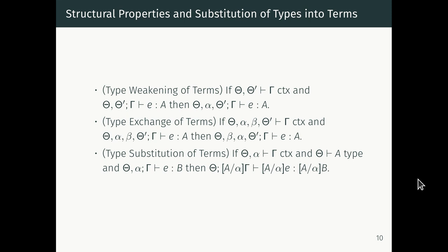With all this machinery in place we can show the usual properties about substitution for terms. We're substituting types for type variables — we showed it worked for types and for contexts, and now we show it works for terms too. If gamma is a well-formed context in theta-alpha, and A is a well-formed type in theta, and e has type B in context theta-alpha-gamma, then substituting A for alpha everywhere — in the context, the term, and the output type — still gives a well-formed typing judgment.